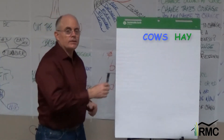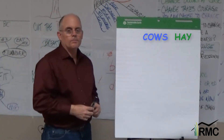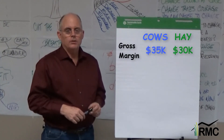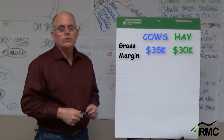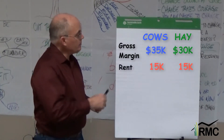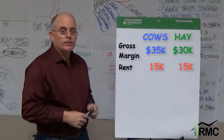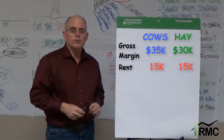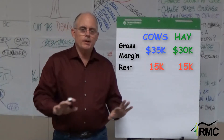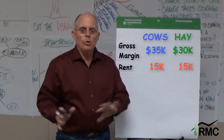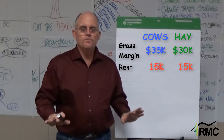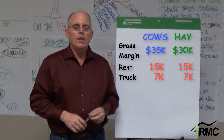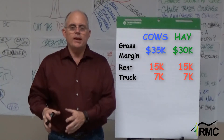Let's say I have hay and cattle enterprises. My cattle gross margin is $35,000 and my hay gross margin is $30,000. I rent pasture for $15,000 and I rent my hay ground for $15,000 too. If I stopped either enterprise, I'd let go of the lease and I'd lose the cost. I also have a pickup truck — I use it half in the hay and half with the cattle.